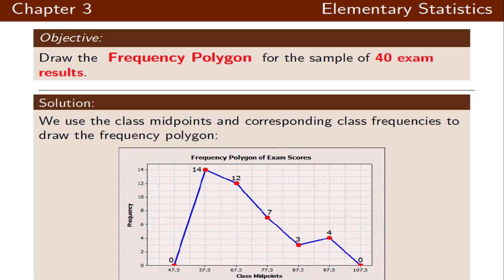We had class midpoints of 57.5, 67.5, all the way to 97.5. We add class width to go to the right, getting an extra midpoint of 107.5. Then we subtract class width to get the one on the left side, 47.5. We use the frequency of each midpoint to determine the height, then connect them to finish the frequency polygon graph.